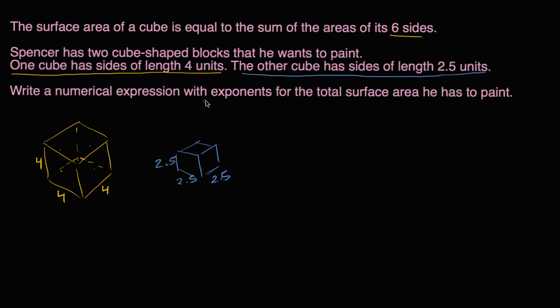Write a numerical expression with exponents for the total surface area he has to paint. Well, we could think about, there's six sides here, and what's the area of each of the six sides? So there's six sides like this. So there's going to be six times the area of each side. And what's the area of each side? Well, each side is going to be four by four. Each side is a four by four square. So each side is going to have an area of four squared.